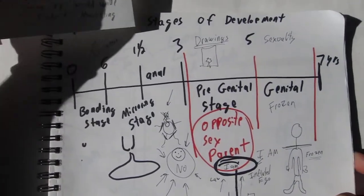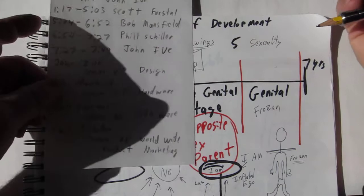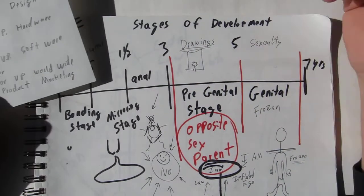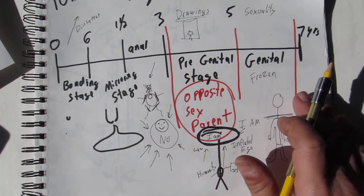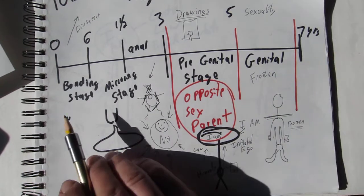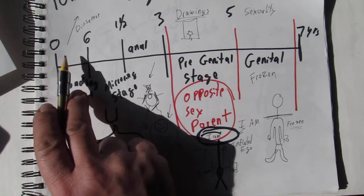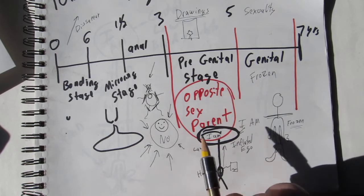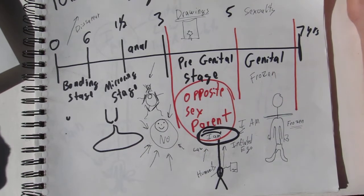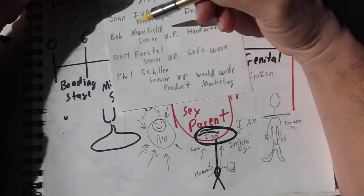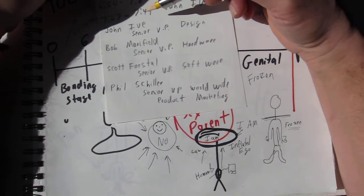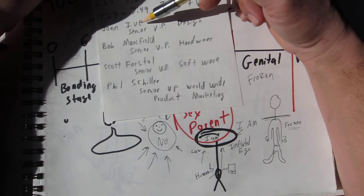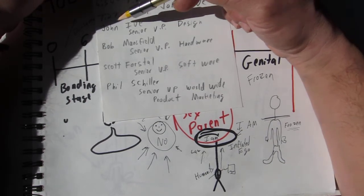You saw the video and now we're going to look at this chart. Who would think that these four people involved are perfect representations of some of the character defenses? We don't have everybody, but we have someone that has a character defense in the bonding stage, in the anal stage, in the pre-genital stage, and the genital stage. We're going to go over certain body characteristics and certain things about them.